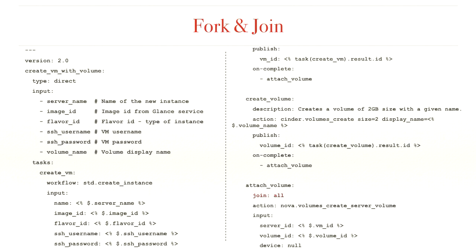Fork and join: sometimes a task can only run if all preceding tasks have finished successfully. Here is a more complex example you might use on Catalyst Cloud. We have three tasks: the first creates a virtual machine, the second creates a volume in the block storage service, and the third attaches the volume to that virtual machine. Clearly, the third task can only run if both the VM and the volume are created successfully — you can use 'join all' to wait for all preceding tasks.